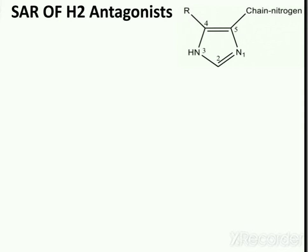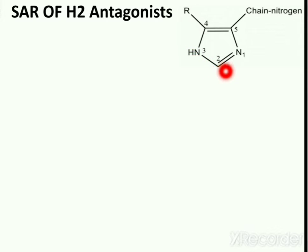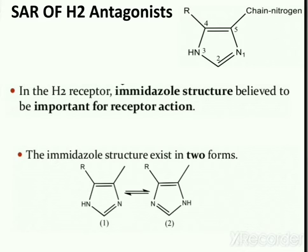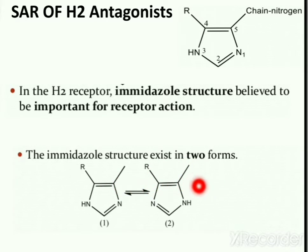At the H2 receptor, the imidazole structure is believed to be important for receptor action. Imidazole is a five-membered heterocyclic compound containing two nitrogens. The imidazole structure exists in two forms which are tautomeric in nature, so we can say these are two tautomers of imidazole.